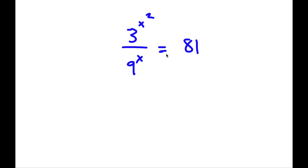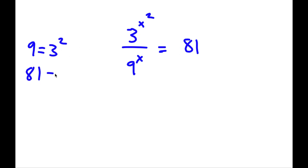I have 3 to the power of x squared over 9 to the power of x is equal to 81. First off, 9 here is the same thing as 3 squared, and 81 is the same thing as 3 to the power of 4.